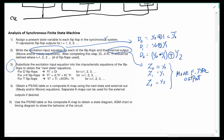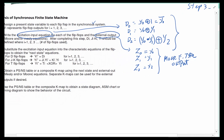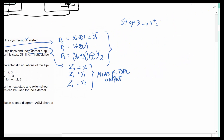Now we get into step 3. Step 3 says to take these excitation equation values and put them into the characteristic equation for the D flip-flop. The characteristic equation for a D flip-flop is simply y+ = d. So: y0+ = y0-not; y1+ = y0 XOR y1; and y2+ = (y0 AND y1) XOR y2.